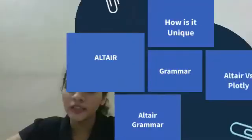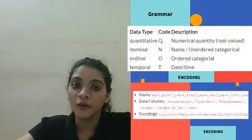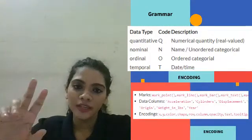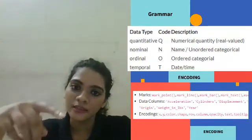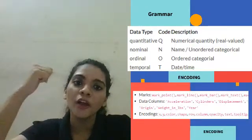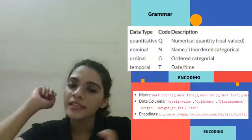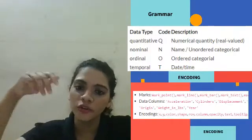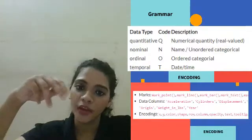Let's explore the grammar of Altair. Don't freak out by seeing this. First, see the second image here, where you see the mark, data column, and encodings. This is an example from the Altair documentation. I'll provide the link in the description box. This is a cars dataset taken from Vega dataset.